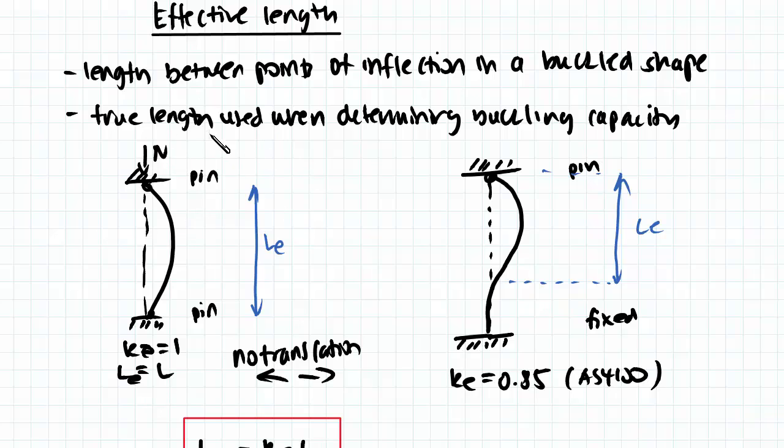For the connection on the left, it's a braced connection meaning that there's no translational movement between the top connection and the bottom connection. They will always be in line and the top and bottom are pinned and pinned. In this case, our length is actually fully effective. The full length is actually an effective length.